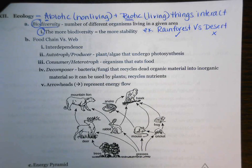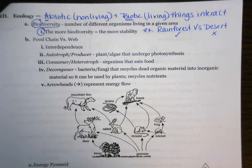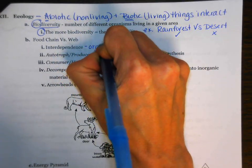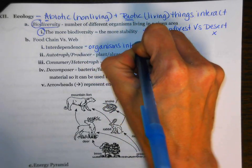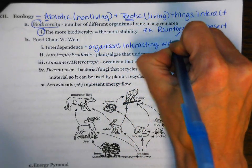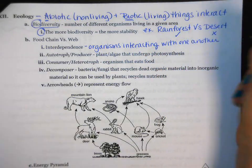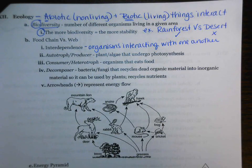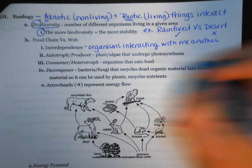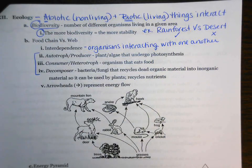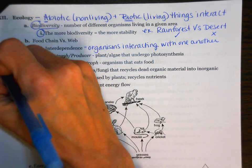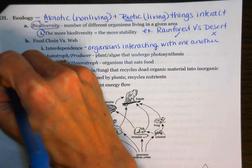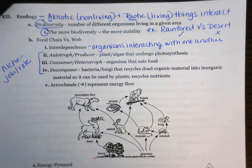Moving on in ecology, we're going to look at the food chain versus the food web. Our first term is interdependence, which is about how all different organisms interact with one another. We're going to look at all the different niches that organisms can fill. Each one of these is a job or a role that an organism can have — a niche is really just talking about what a specific organism is going to be eating, a feeding relationship.